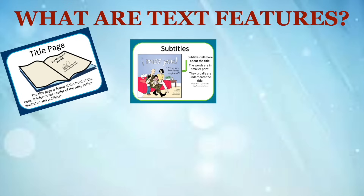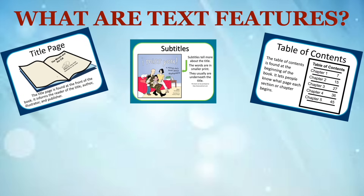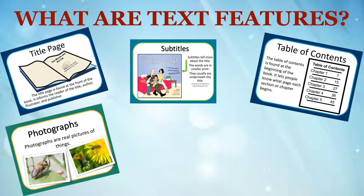Subtitles tell more about the title. The words are in smaller print and they usually appear underneath the title. Table of contents are found at the beginning of the book. It lets people know what page each section or chapter begins.